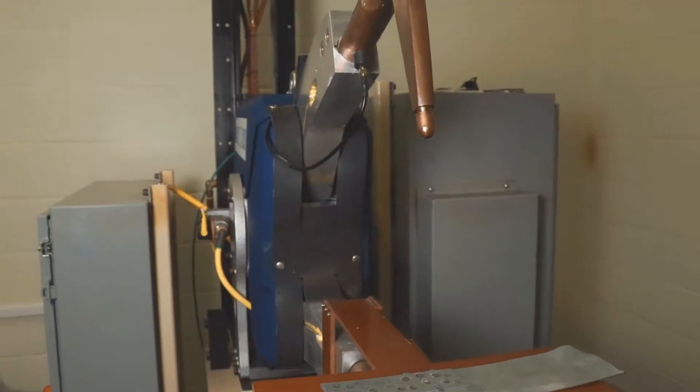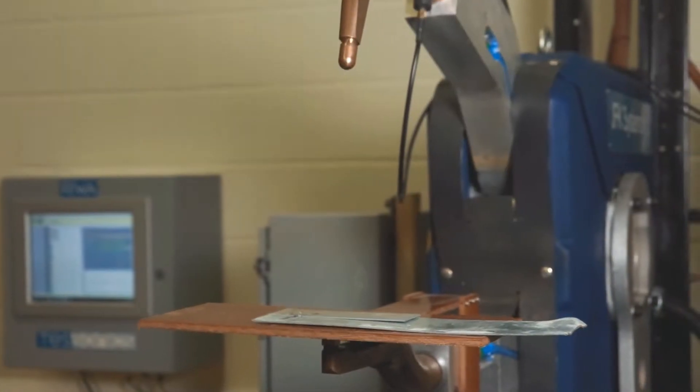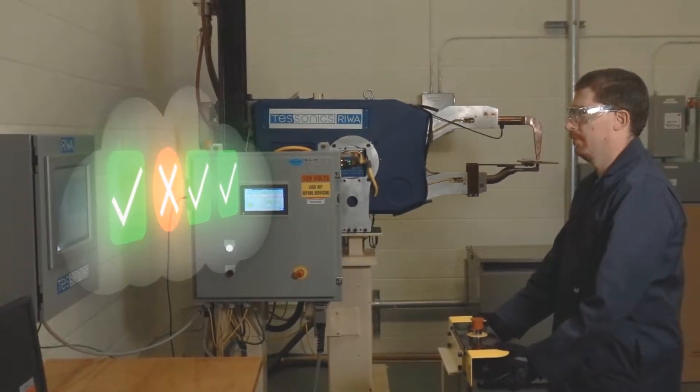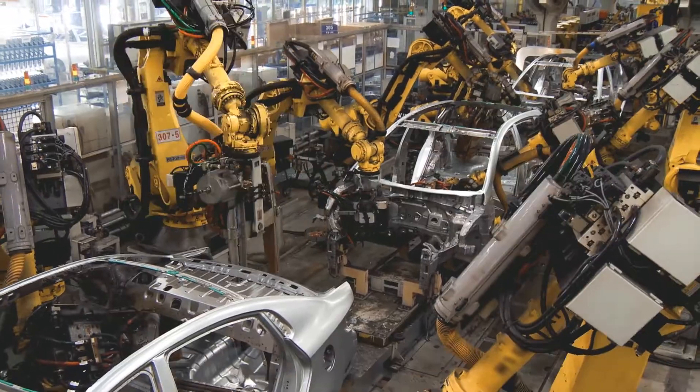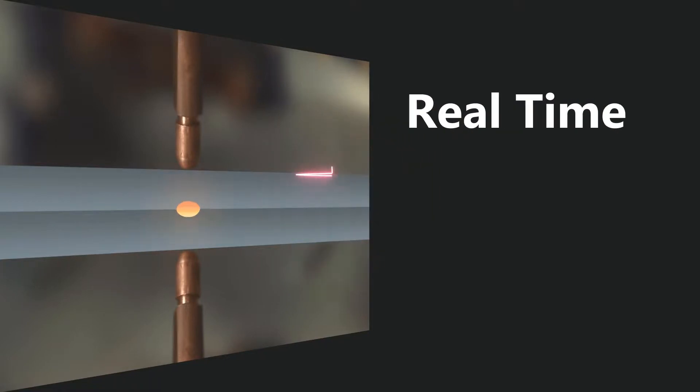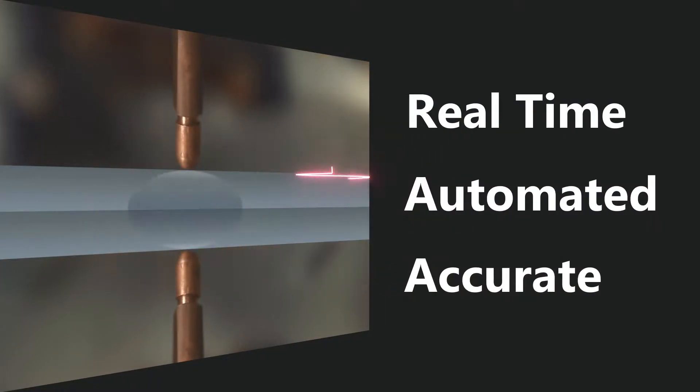The Rewa system designed by Tessonix is a revolutionary new technology, offering a completely new approach to spot weld analysis. Unlike other ultrasonic systems, which can only analyze a weld after completion, Rewa monitors the quality of a weld during formation of the nugget.